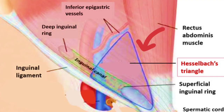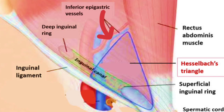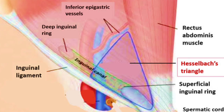Medially, it is bounded by the lateral border of the rectus abdominis muscle. Laterally, it is bounded by the inferior epigastric vessels, whereas inferiorly it has the inguinal ligament.